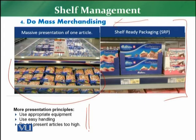For mass merchandising, you need to use proper equipment, and the presentation must be easily handled. Normally, handling should not be challenging for the customer. Also, do not present articles too high — for example, if microwave ovens are displayed at 7 or 8 feet, the customer will not be able to pick the product even if he likes the display. The presentation should be massive and show a bulk image, but ultimately it must be accessible and easily handled by the customer.